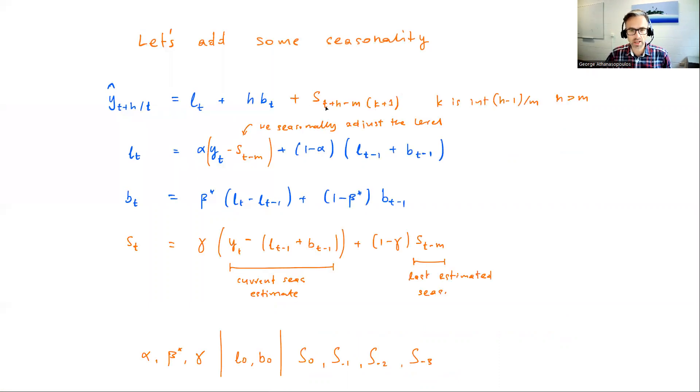Hence, what they do is add a seasonal index, a seasonal component to the forecast equation, where S is indexed by T plus H minus M times K plus one, which looks quite congested, but it is very simple. It basically takes the last seasonal component you see for the corresponding seasonal period.